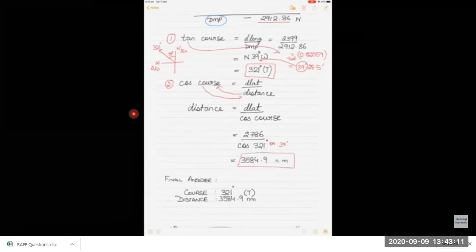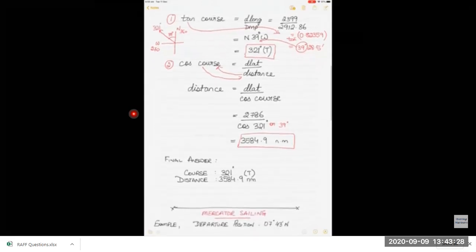You'll get the same answer, maybe sometimes negative which you can ignore. And the distance is 3584.9 nautical miles. We have to calculate and keep in decimals. The final answer is course 321 degrees true and distance 3584.9 nautical miles.